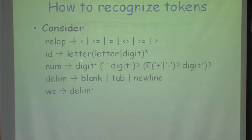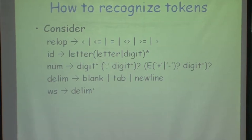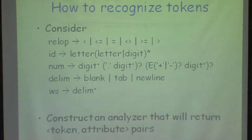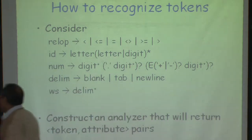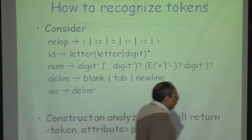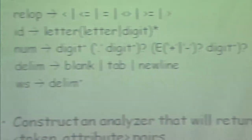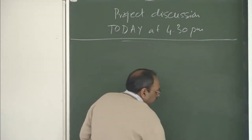How do we recognize tokens? We will try to develop transition diagrams for these specifications. I have relational operations, identifiers, numbers, delimiters (blank, tab, newline), and white space (one or more delimiters). For identifiers: in some start state, the first character I can see is only a letter. On seeing a letter I go to a new state where I can continue to see either a letter or a digit, staying in that same state. On seeing 'other' — anything that is not a letter or digit — I go to a final state.